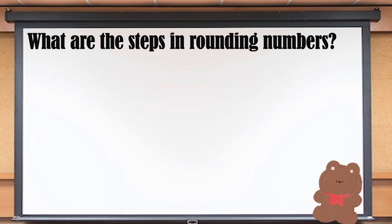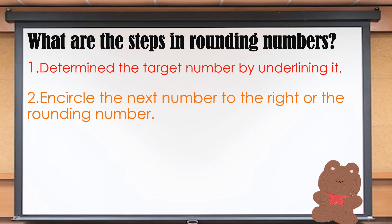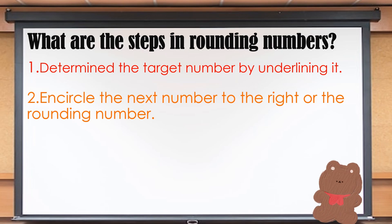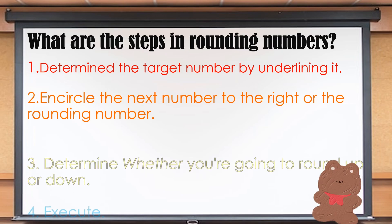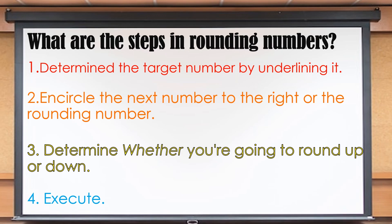What are the steps in rounding numbers? Step 1: Determine the target number by underlining it. Step 2: Encircle the next number to the right, or the rounding number. Step 3: Determine whether you're going to round up or down. And step 4: Execute.